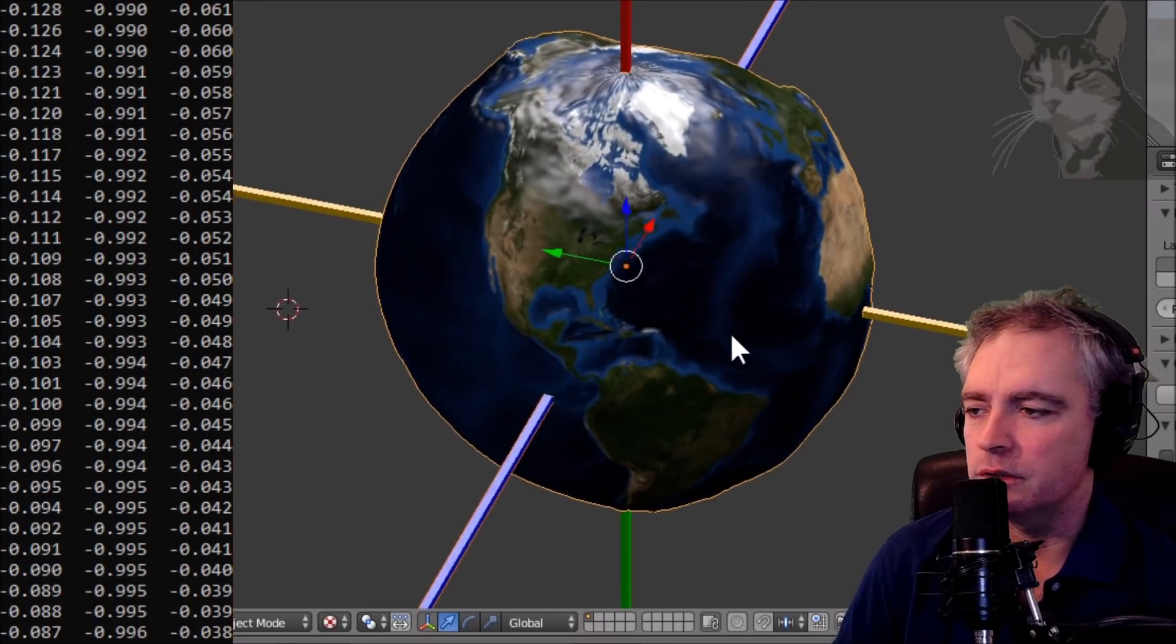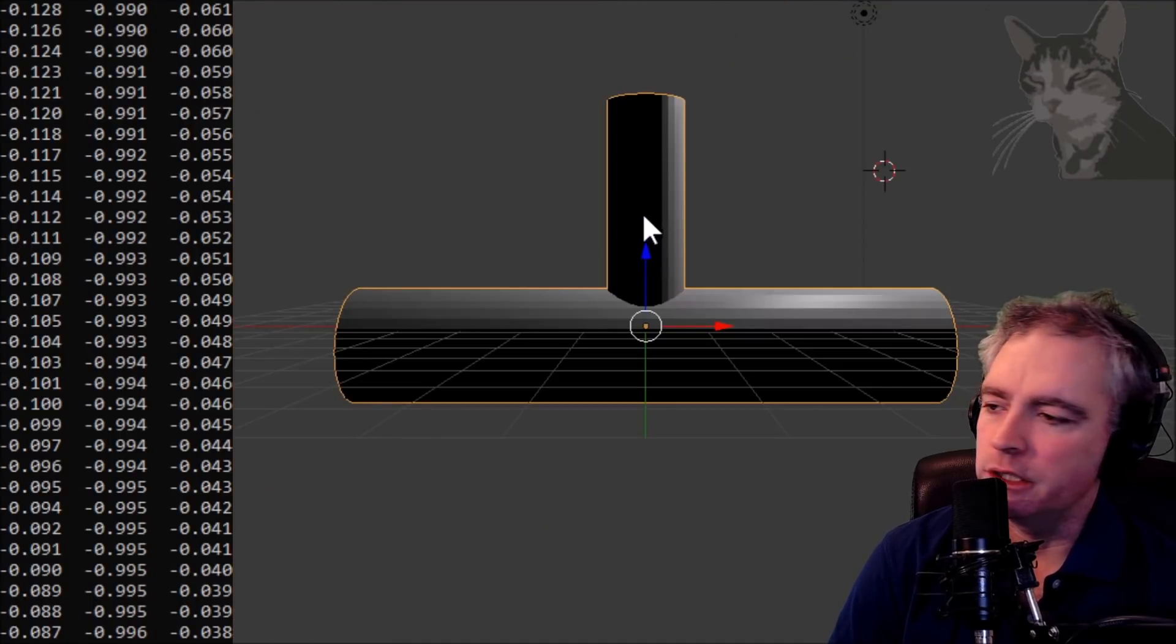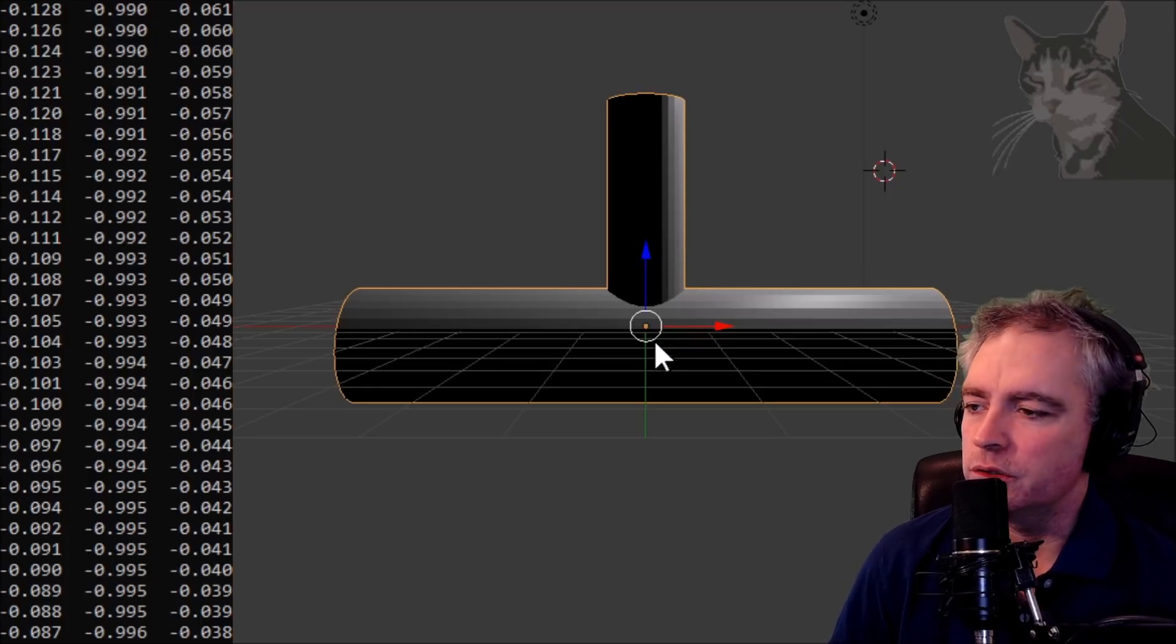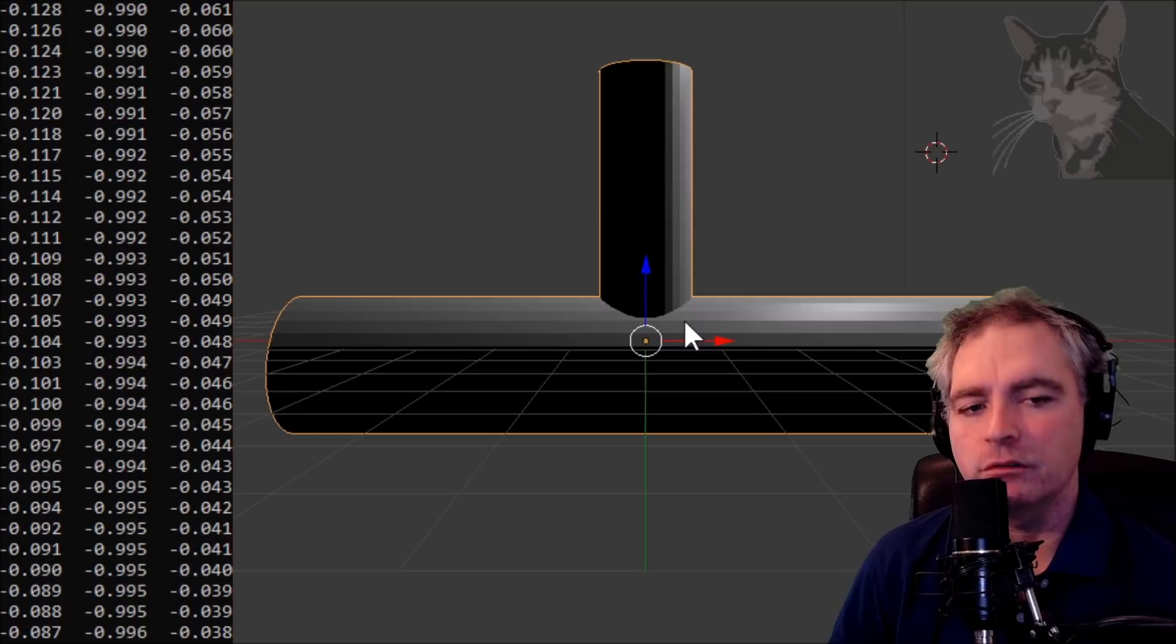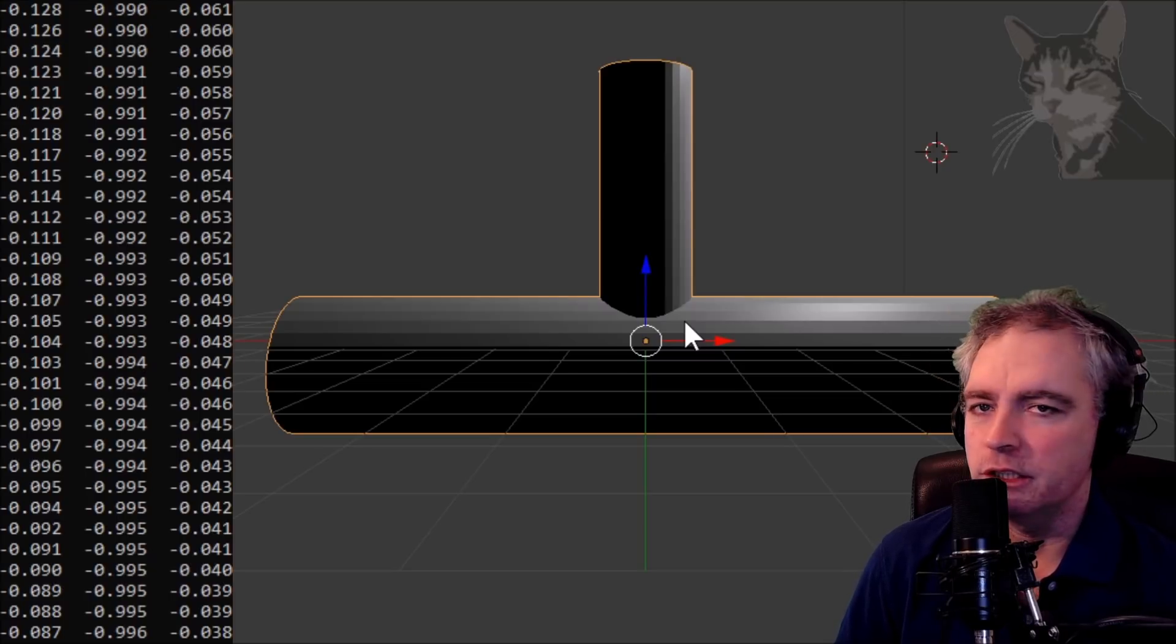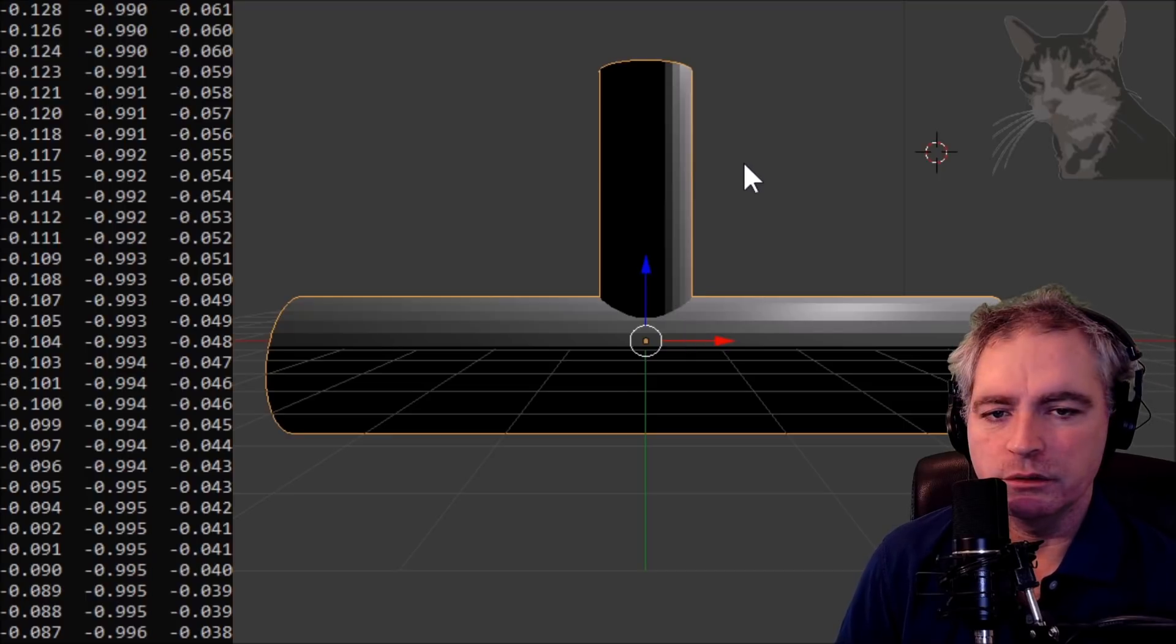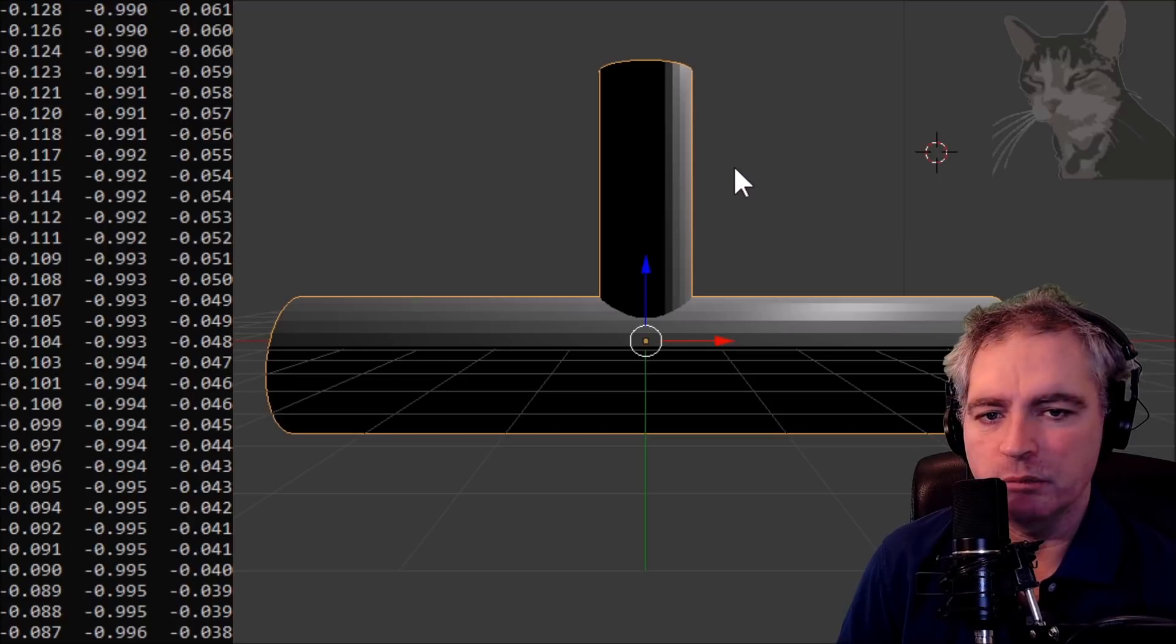So back to the T-handle. Every solid has three principal axes through its center of mass, including the Moon and the Earth. Each of these axes has a corresponding moment of inertia. The moment of inertia is measured by how difficult it is to rotate the body on that particular axis.